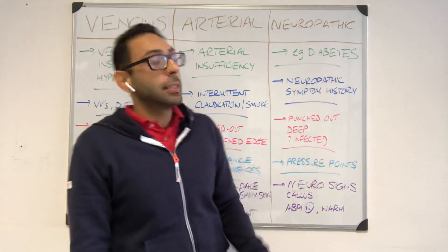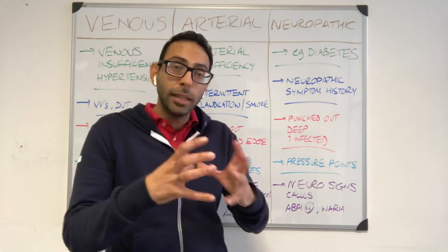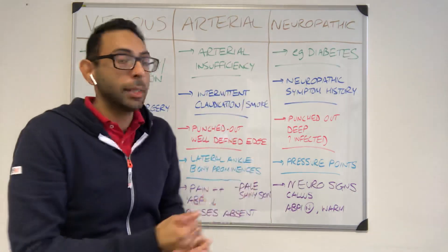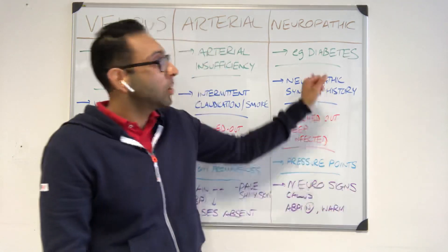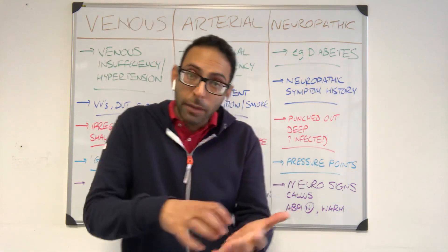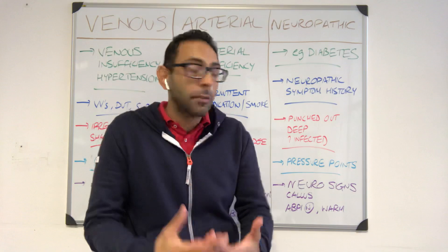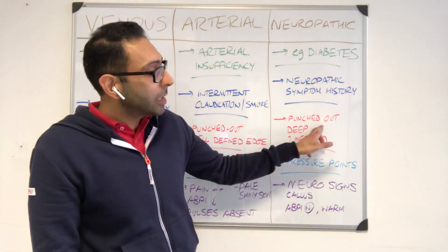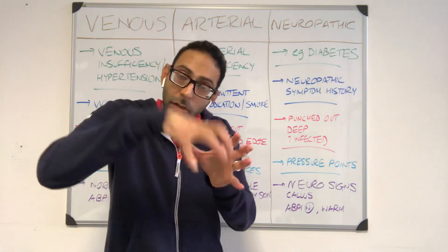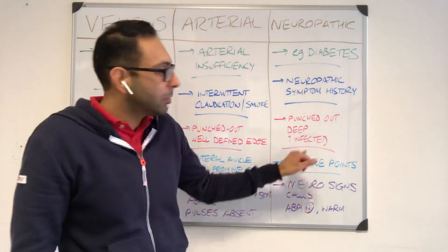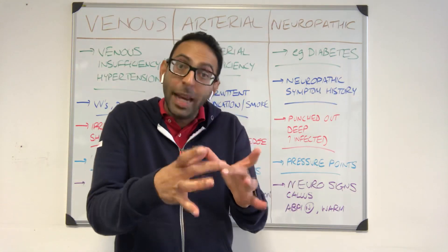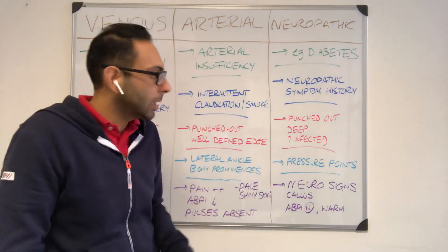Then you have neuropathic ulcers. If you get a purely neuropathic ulcer — for example in diabetes — you get key features. But you can get mixes between arterial and neuropathic, which can make it quite difficult to differentiate. If it's purely neuropathic, you may get a neuropathic symptom history: burning around the area, decreased sensation, paraesthesia. They're usually quite punched out as well, but they can go very deep because sensation is quite poor — you may not realise it's going deeper and deeper. That's why you can get quite nasty infections, like osteomyelitis not picked up because there's no pain or sensation.